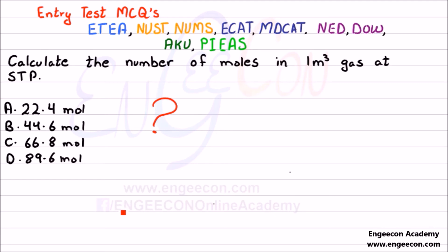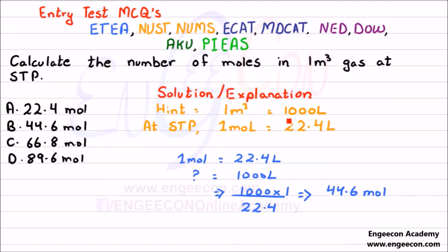I am explaining the solution — try to cross-check your answer. We know that 1 cubic meter equals 1000 liters, and at STP 1 mole equals 22.4 liters. So if 22.4 liters contains 1 mole, then 1000 liters contains — on cross multiplication — 44.6 moles. So B is the correct answer.